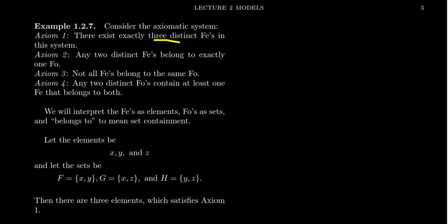Not all fees belong to the same foe. There's no foe that contains all three of them, X, Y, and Z. So axiom three satisfied. And axiom four, any two distinct foes contain at least one fee that belongs to them. If you take F and G, they both have X. If you take F and H, they both have Y. And if you take G and H, they both have Z. So there's at least one that belongs to them.